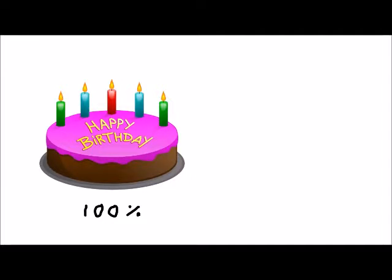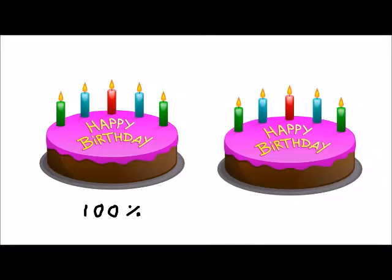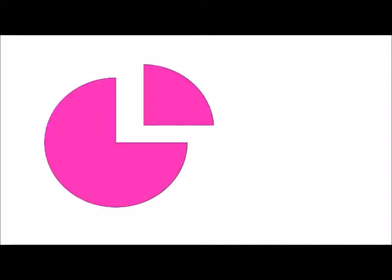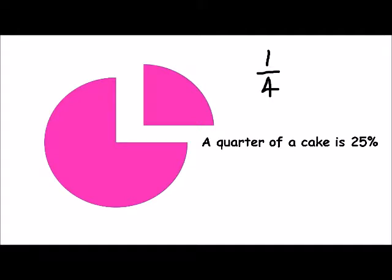Can we have more than 100%? Yes we can. If we have two whole cakes, one cake would be 100% and another cake would give us 200%. Here's our cake, and here it is with a quarter cut out of it — that's what it looks like as a fraction, and as a percentage it would be 25%, or 25 over a hundred.